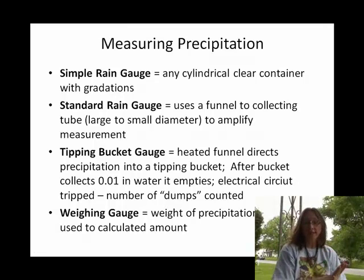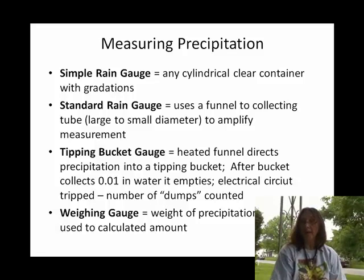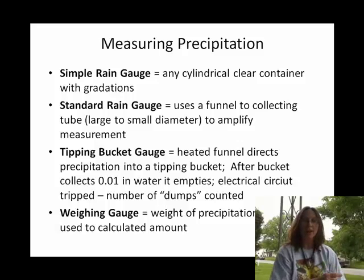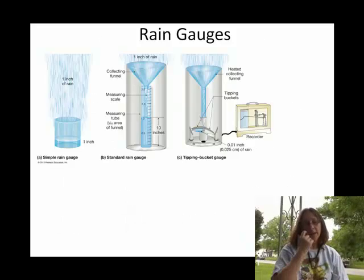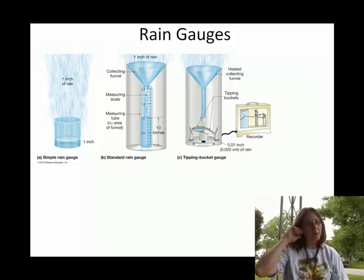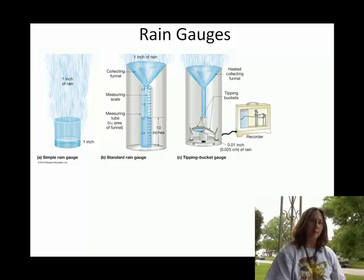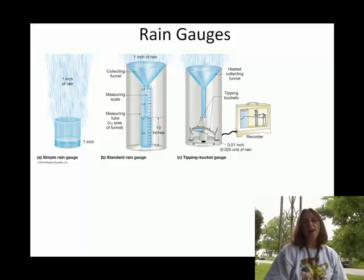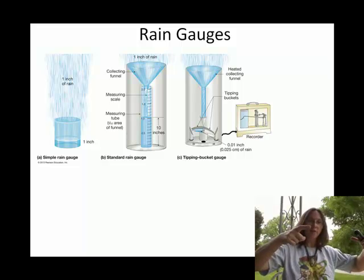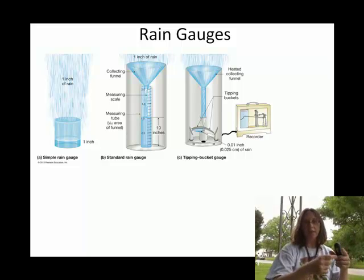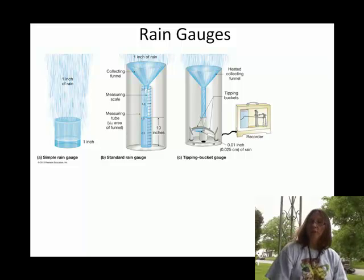Some of you may have actually done this — you have a rain gauge and your weather buffs have gone out there, because it's important to know how much precipitation occurred where. So it's not as easy as you might think to get how many inches of rain fell. A simple rain gauge would just be a cylinder where you measure how many inches of rain fell. Then a standard rain gauge puts a funnel on top and accounts for the diameter being larger there than it is in the measuring part.